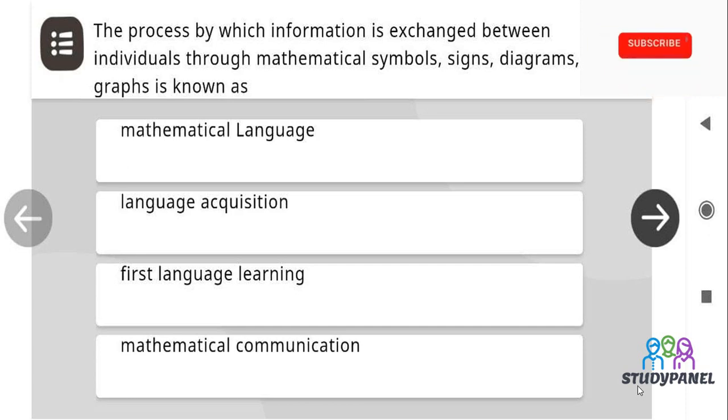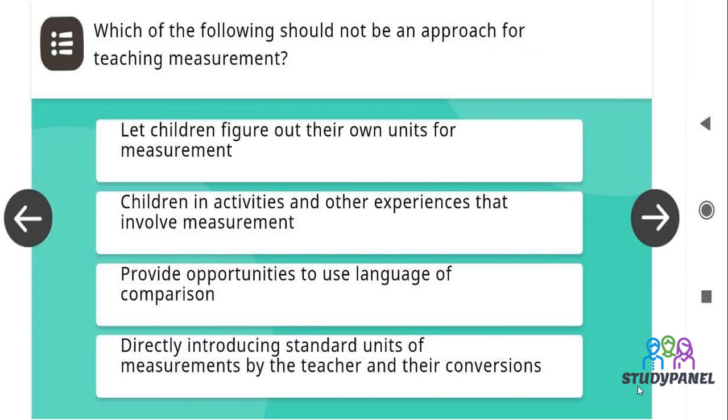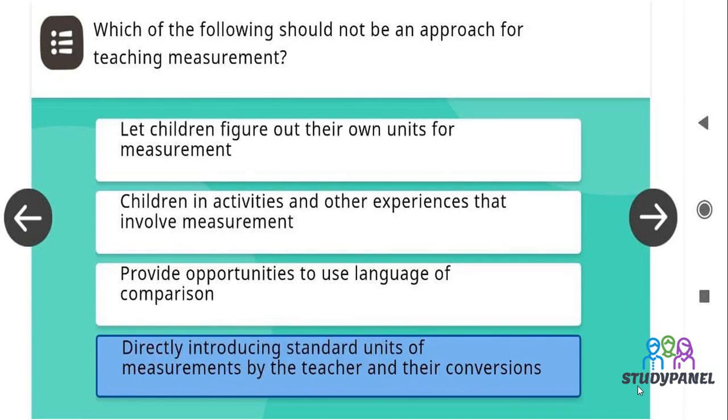The process by which information is exchanged between individuals through mathematical symbols, signs, diagrams, graphs is known as mathematical communication. Which of the following should not be an approach for teaching measurement? And the correct answer is directly introducing standard units of measurement by the teacher and their conversions.